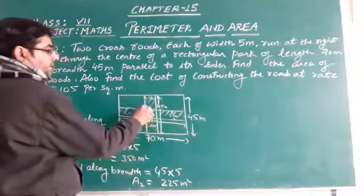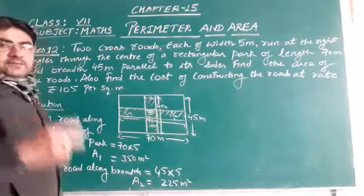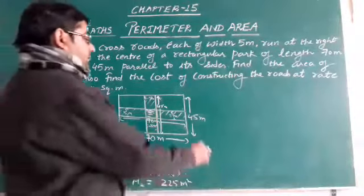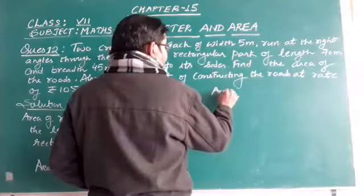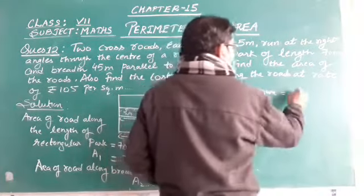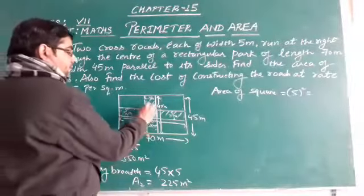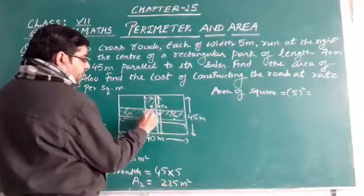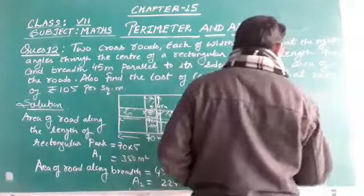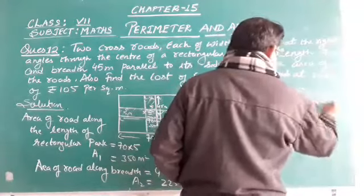Now while calculating the area of both these roads, this middle portion, this square, comes twice. So we subtract the area of the square one time. So here the area of the middle square is 5 squared, because this side is 5 meters. So 5 from every side, so it is a square. So 5 squared is 25, which is A3. So A3 is 25 square meters.